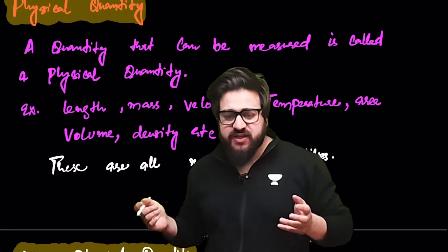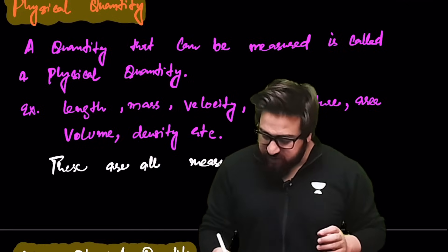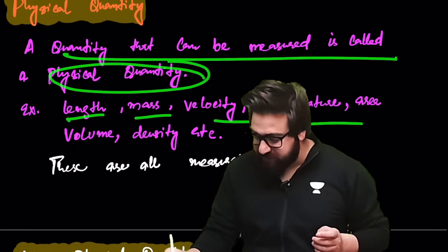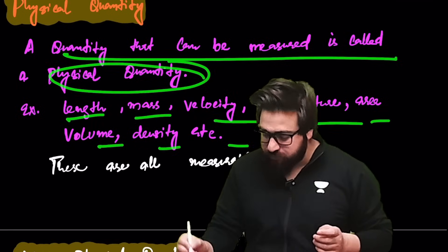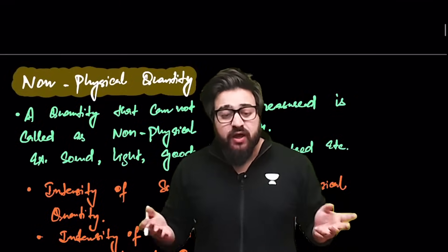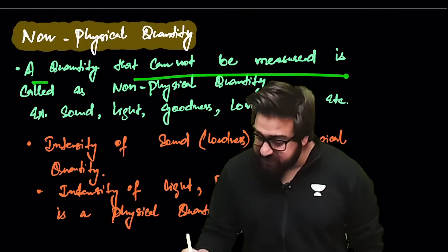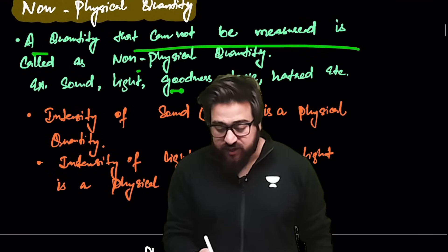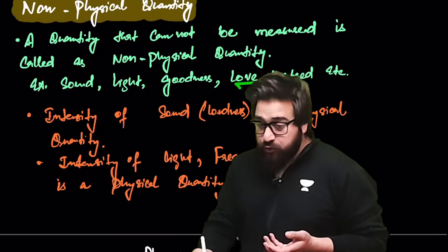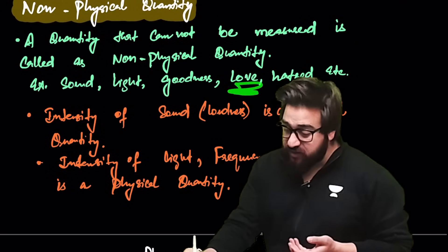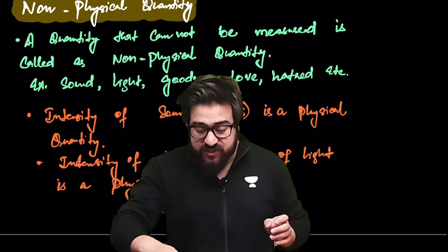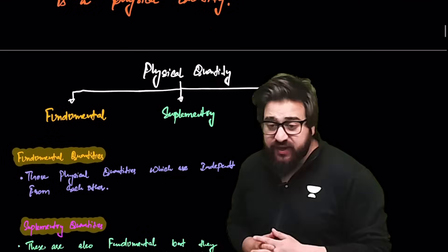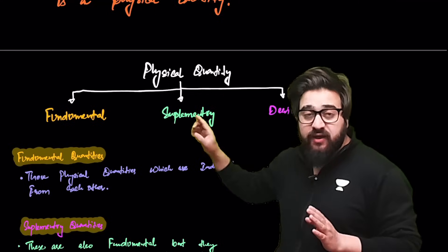The first topic is physical quantity. A physical quantity is one that can be measured, like length, mass, time, temperature, area, volume, density, etc. Then we have non-physical quantities — quantities that cannot be measured — like goodness, love, or hatred. These are quantities which cannot be measured.